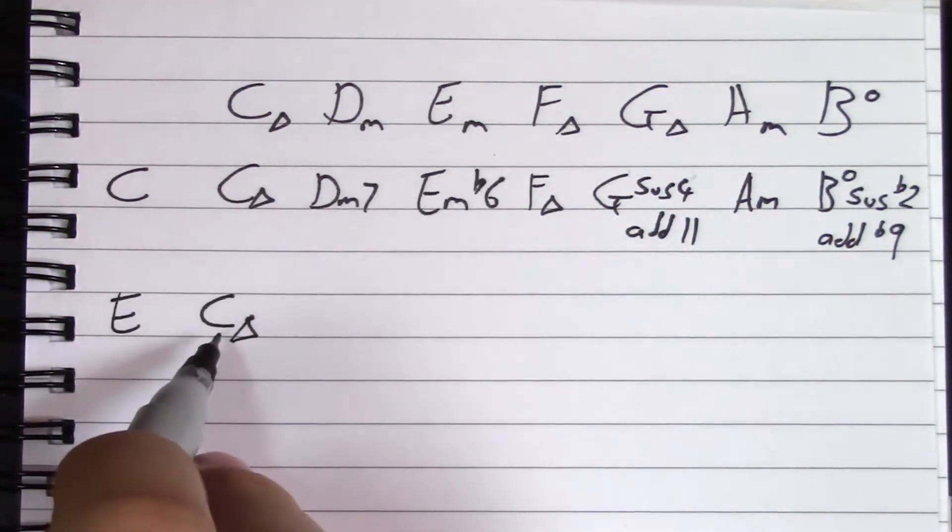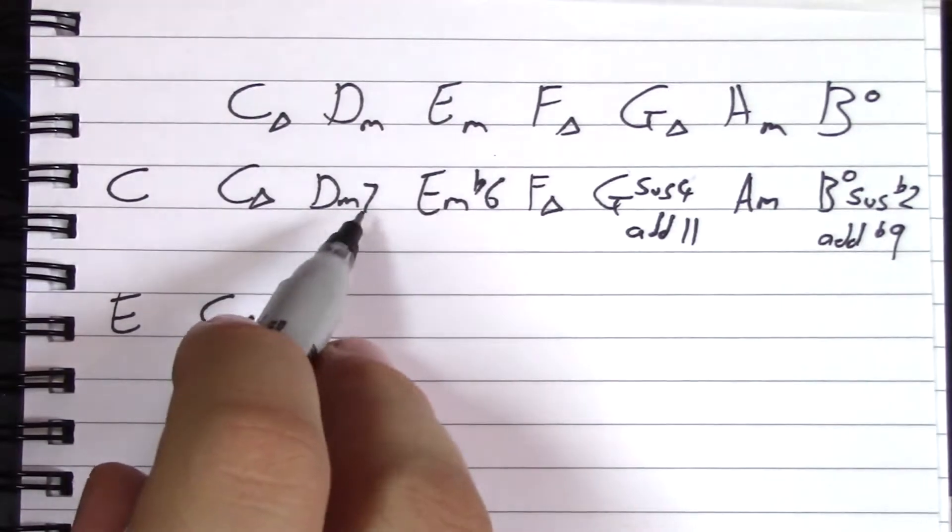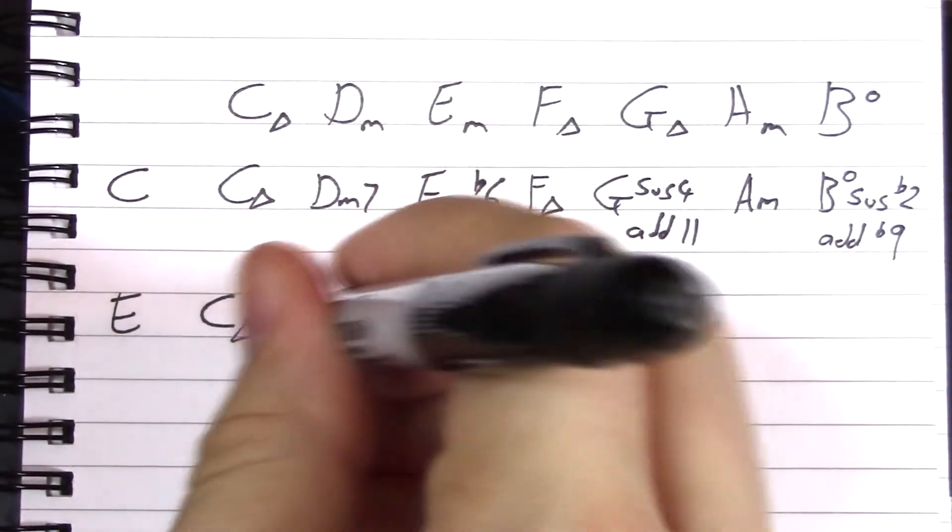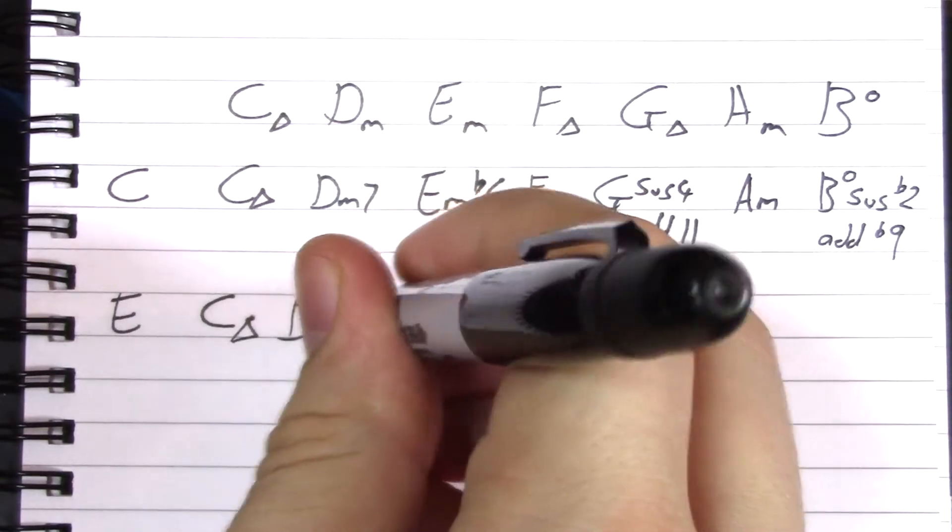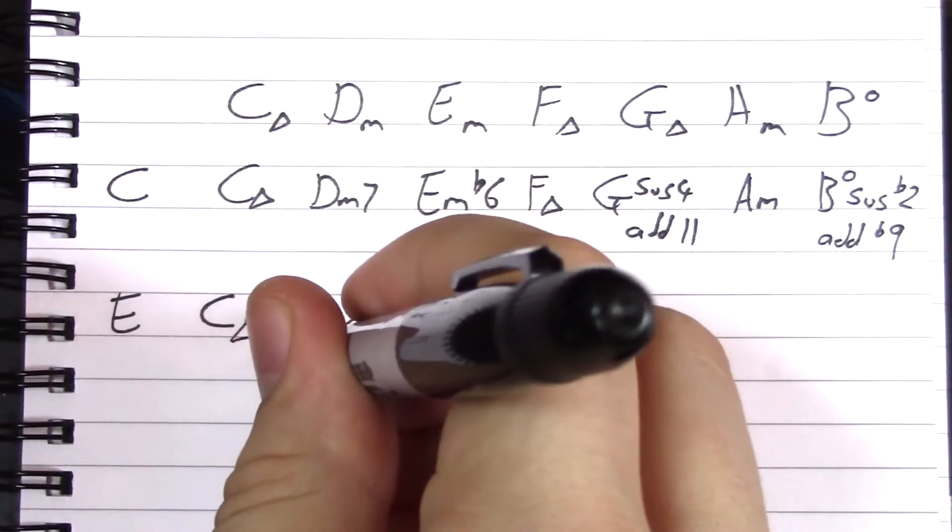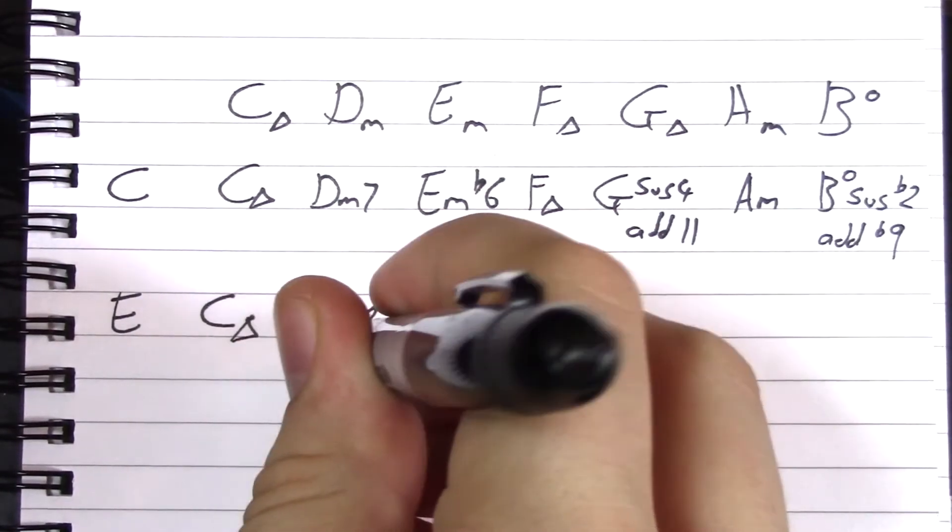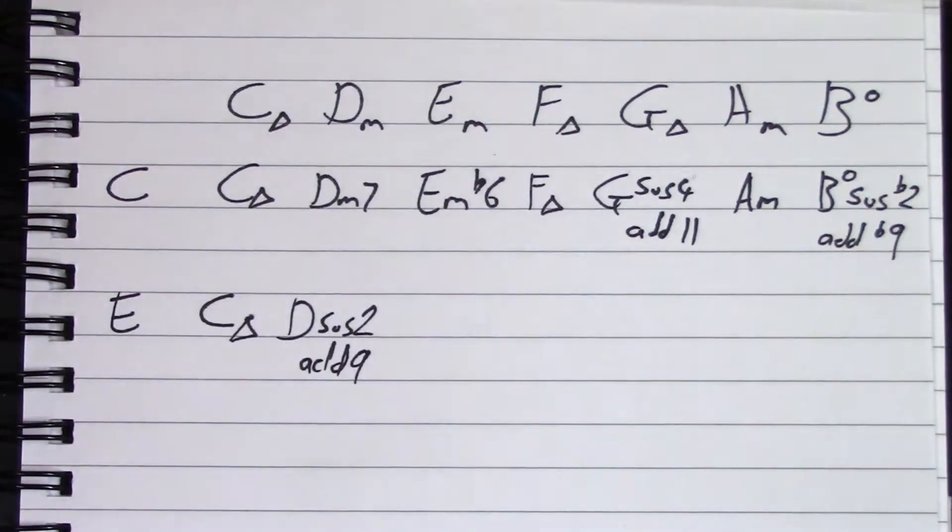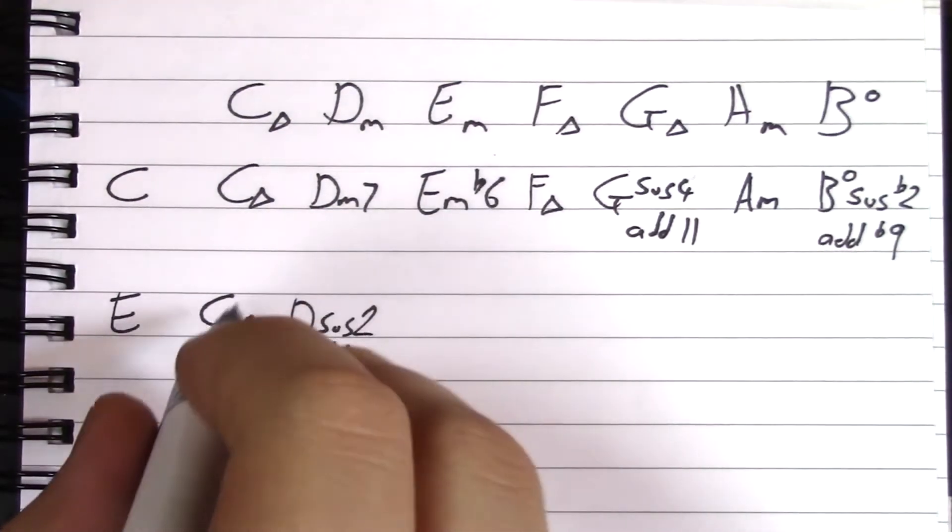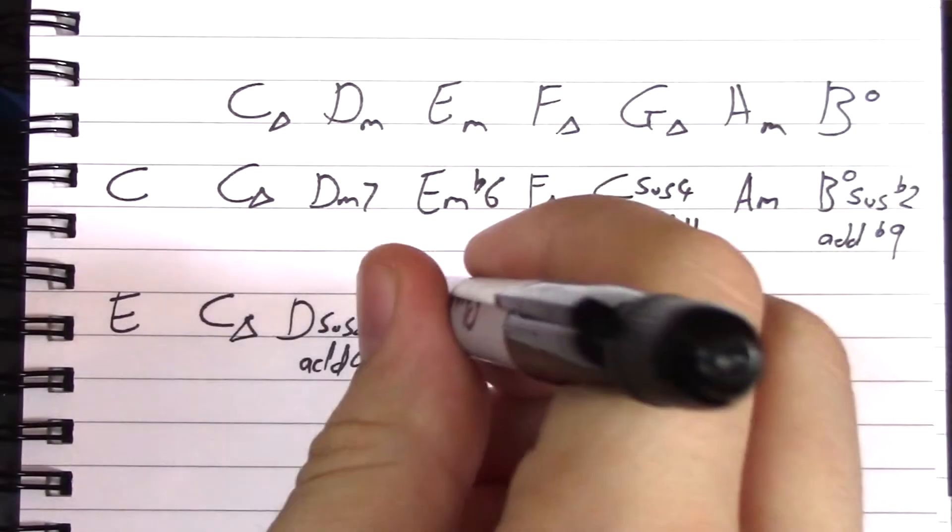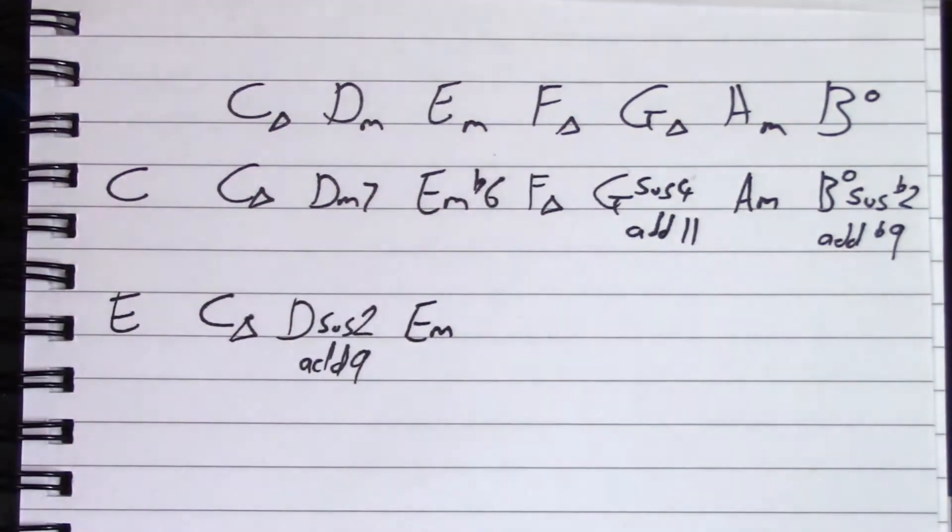So if this is three, this is going to be some kind of two. So we're actually going to get a D sus two, or indeed add nine if you prefer. So three, two, one. Shockingly, E the note is already in E minor the chord.